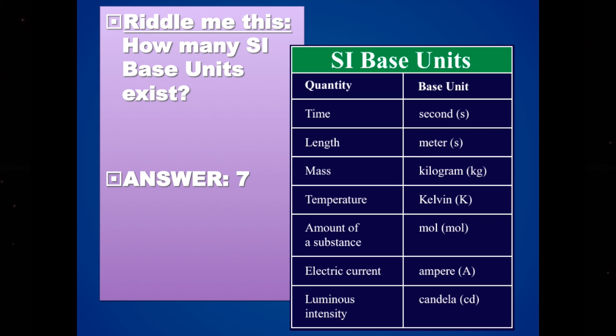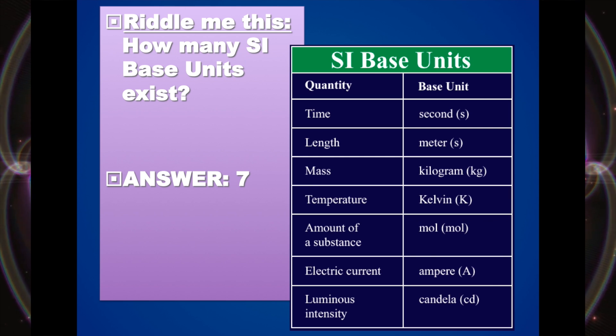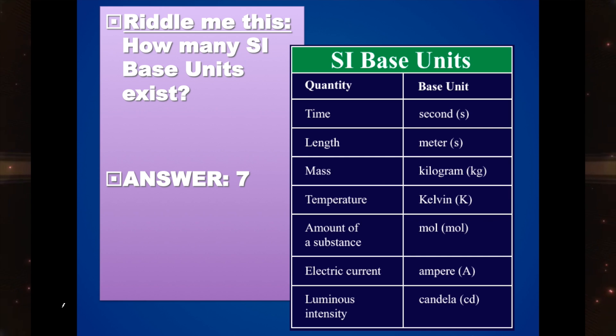Let's take a look at how many base units exist currently in our universe. We know about seven of them. So you can see on this table that I got from the internet, a couple mistakes here on this table.